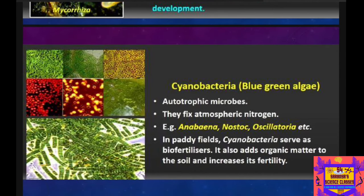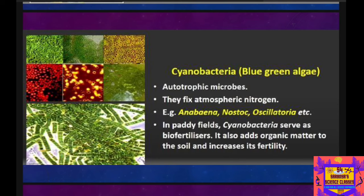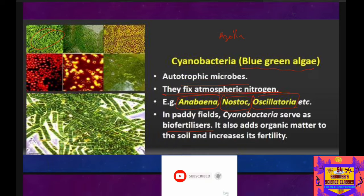Glomus can easily absorb phosphorus and water from the soil so that plants can grow well. Another type of bio fertilizer is cyanobacteria, also called blue-green algae. These are autotrophic microbes that can produce their own food using sunlight and also fix atmospheric nitrogen. Examples include Anabaena, Nostoc, and Oscillatoria. Anabaena azollae is associated with the pteridophyte Azolla and can be used as cattle feed. In paddy fields, cyanobacteria can be grown as bio fertilizers to increase organic matter and soil fertility.